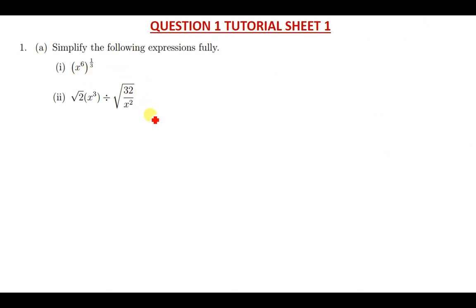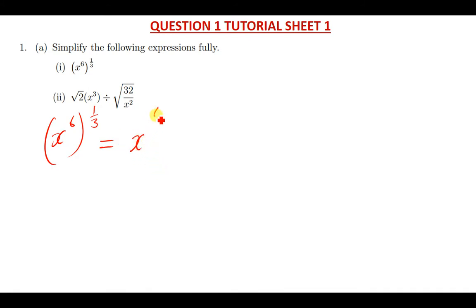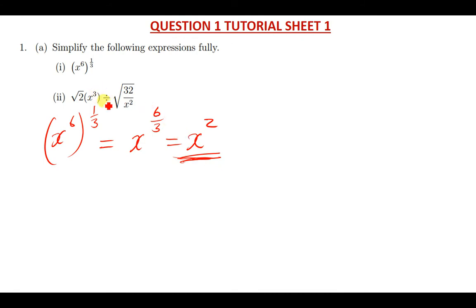Let us now look at the tutorial sheet question. The first one is x raised to power six, then raised to the power one over three. This is the same as six times one over three, giving x to the power six over three. Six over three is just two, so the answer is x raised to power two. We've simplified it.